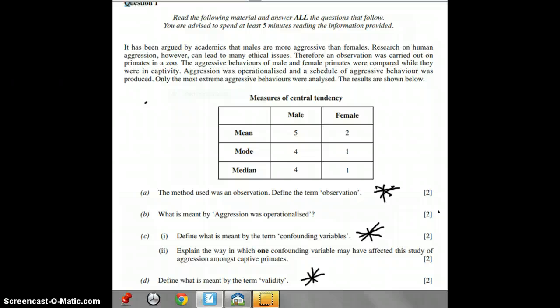Back to the first page. What was meant by aggression was operationalized? It says they created a schedule of aggressive behavior, so they'd have a checklist of aggressive behaviors. They might have a box for punching, another for slapping, another for biting. Operationalizing a variable is deciding how you're going to measure it, and in this case, which ones you're going to put on your observation schedule.